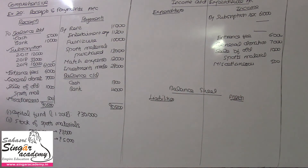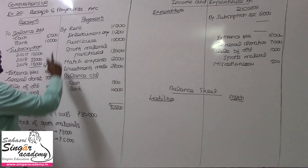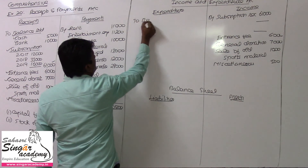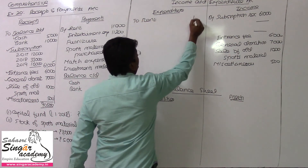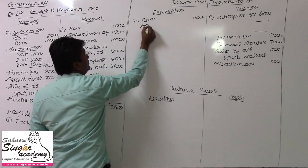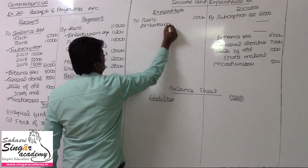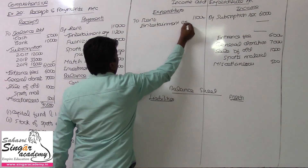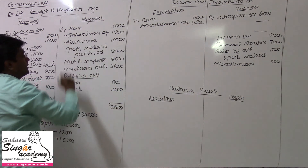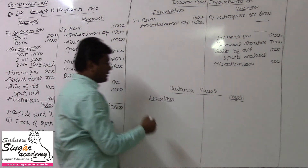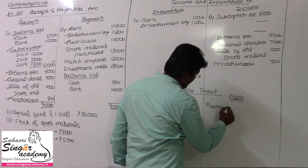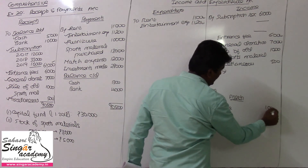Rent expenditure — rent paid: 11,000 rupees. Entertainment expenses are also an expenditure item. Entertainment expenses, value being 11,200. Furniture — this is a new purchase, so it goes to the asset side. Furniture is capital expenditure, value 10,000, and will be an asset item.